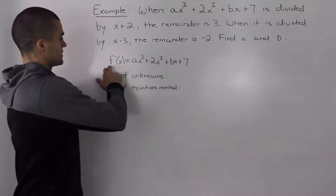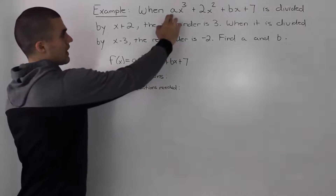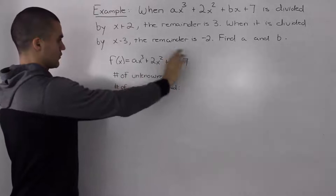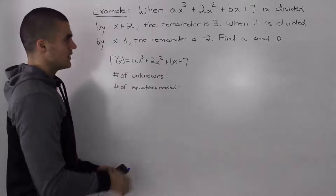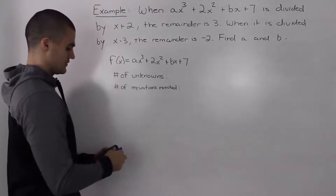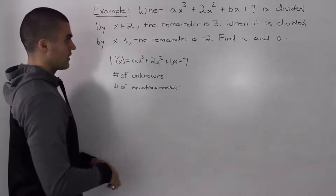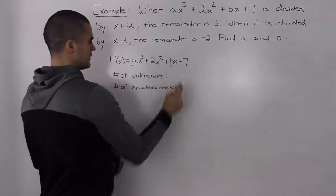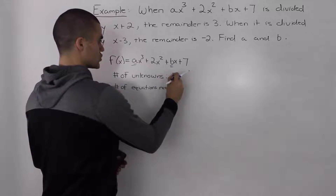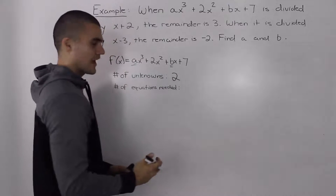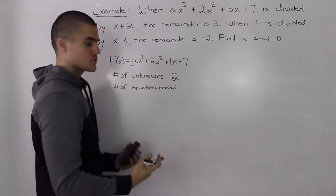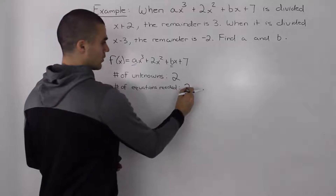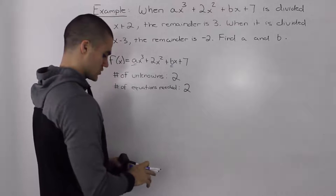The first thing I'm going to do is take our dividend and label it as f of x. How many unknowns do we have in the dividend? We have to find the a and b value, so we've got two unknowns. And whenever we have two unknowns, we're going to need two equations to find them.